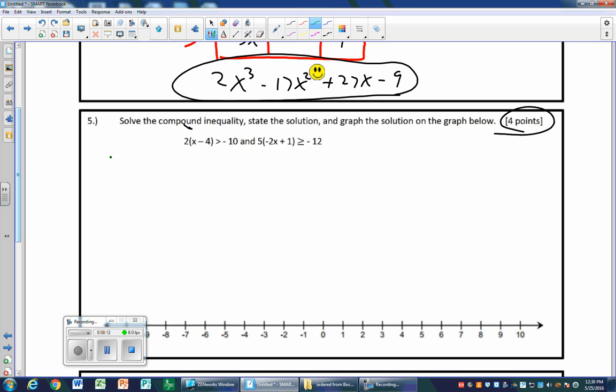2x minus 8 is greater than negative 10. Add 8 to both sides. 2x is greater than negative 2. Divide by positive 2, so x is greater than negative 1. That is stating the solution to the first half. I'm going to bring down the word and.